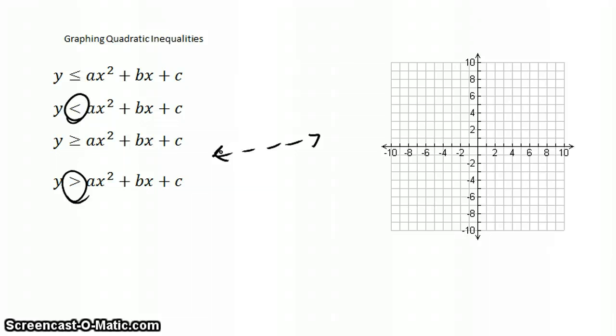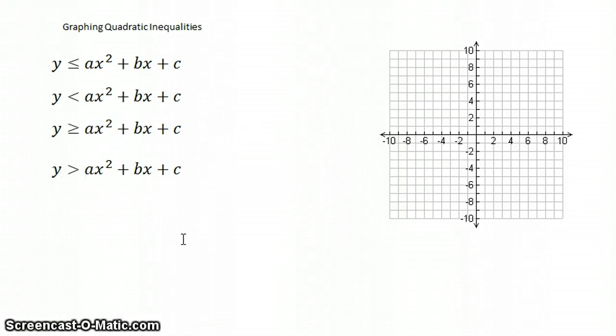So this is really just the same rules that you're following when you are graphing linear equations and linear inequalities. Also, take note that if we have a less than or equal to or a less than, you're going to shade below the graph. And if it is greater than or equal to or greater than, you shade above.